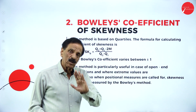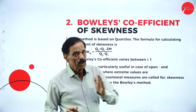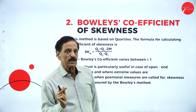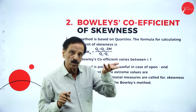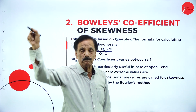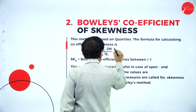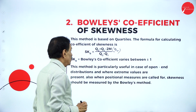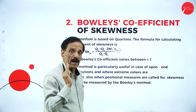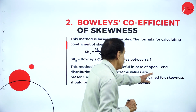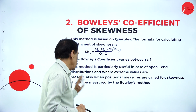This method is based on quartiles. There are 3 quartiles: Q1, Q2, Q3. Q1 is N by 4, Q2 is N by 2, Q3 is 3N by 4. We apply the formula: Q1 = L1 plus (N/4 minus CF) over F into C. The same formula applies for Q2 and Q3, with N/2 and 3N/4 respectively. Then we apply Bowley's formula: (Q3 + Q1 - 2Q2) divided by (Q3 - Q1). This is called Bowley's coefficient of skewness. It varies between positive or negative 1 - the answer should not exceed 1. This method is particularly useful in open-ended distributions where extreme values are present, and when position measures are called for.